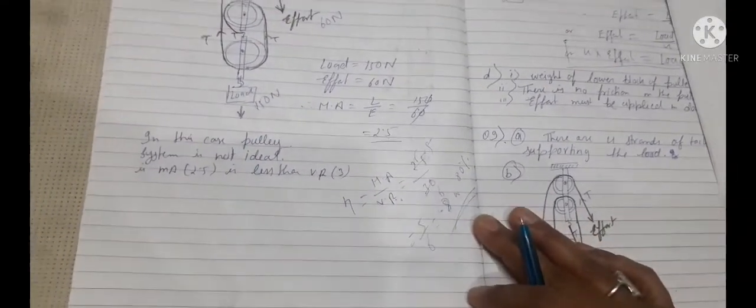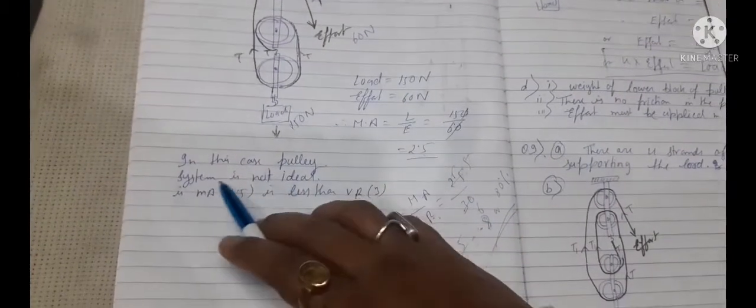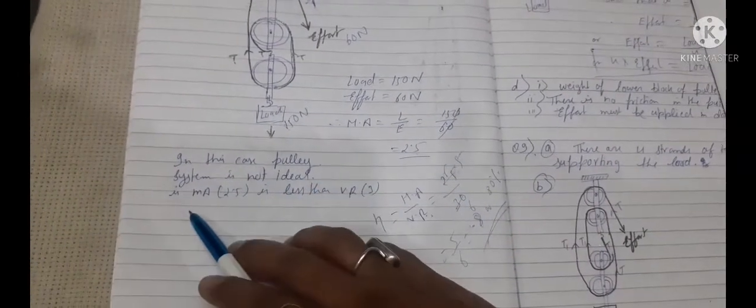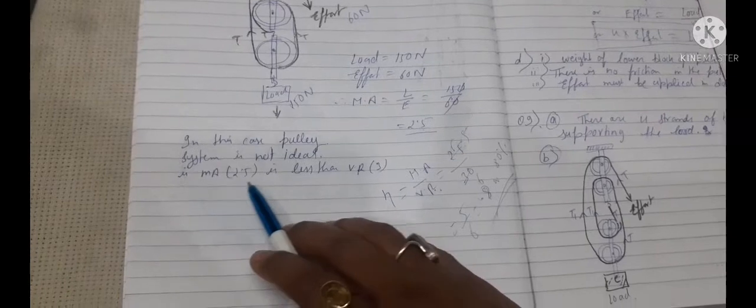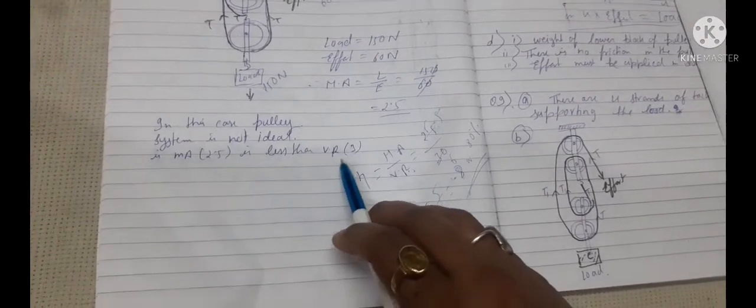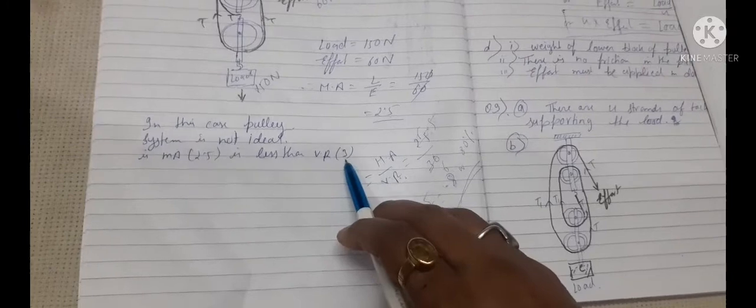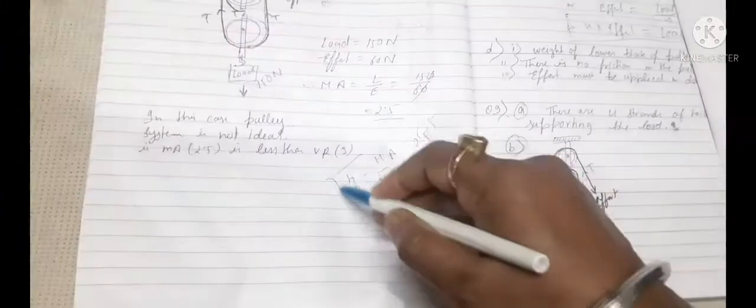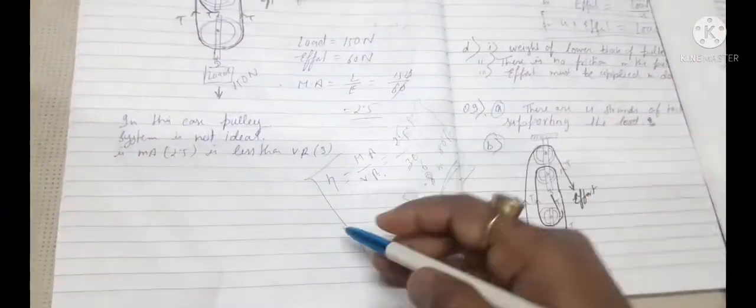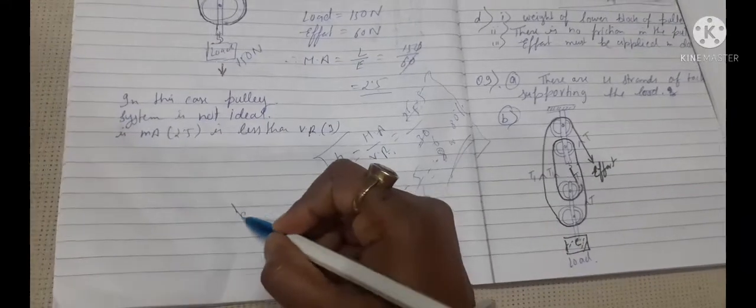Can we call it an ideal machine? In this case, pulley system is not ideal because MA is 2.5 which is less than VR which equals to 3. If you want to give a reason you can write because its efficiency is...